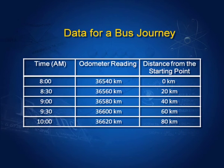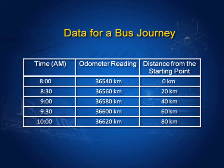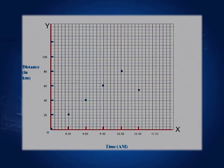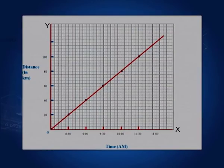Let us draw a graph and illustrate these points. I have data from the journey of a bus. In the first column we have time: 8 am, 8:30 am, 9 am, 9:30 am, and so on. The last column has distance from the starting point: 0 km at 8 o'clock, 20 km at 8:30, and so on. On the y axis we have taken distance, which is the dependent variable. On the x axis we have taken time, which is the independent variable. We draw each point and then join all these points by a line. This line is the graph between distance and time.